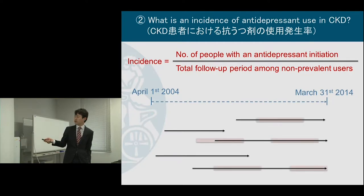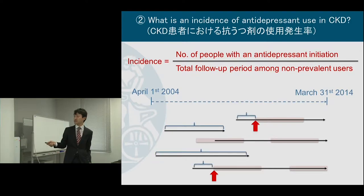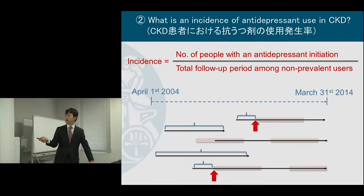Let me show the antidepressant prescription period in pink. This is the period of receiving antidepressants. In this example, incidence can be identified as a new start of a drug — two divided by these observational periods. I excluded the middle patient because he or she was a prevalent user, and therefore not at risk for initiating new antidepressants.